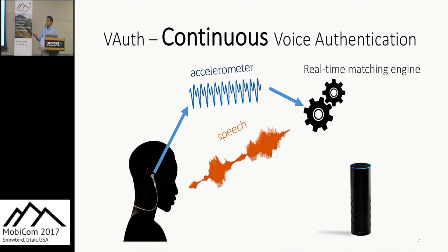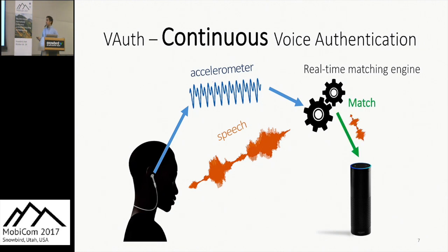We have a dedicated device measuring your body vibrations as you speak. Via Bluetooth — used as a secure out-of-band channel — we transmit these vibration signals to your voice assistant. A real-time matching engine receives the accelerometer signal and matches it with the speech signal. If they match, the voice command passes to the voice assistant and is executed; otherwise, it's blocked.